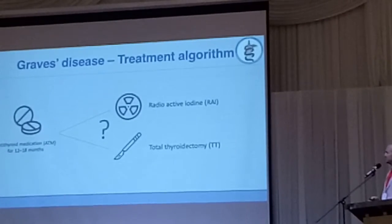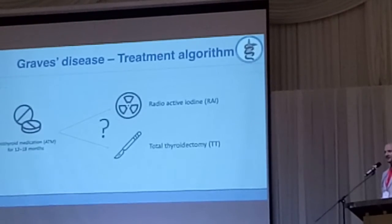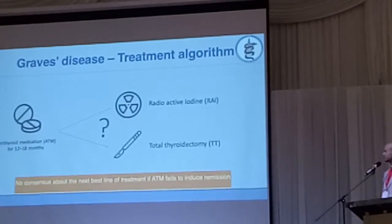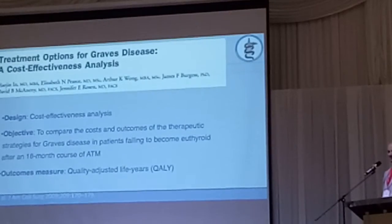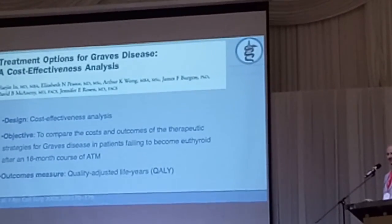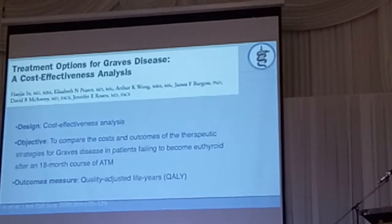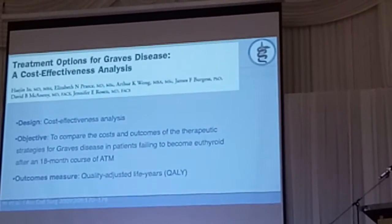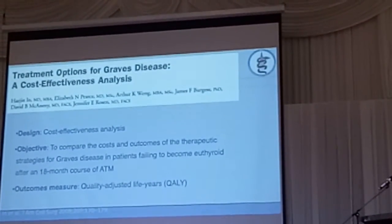In the US they did a study looking at the treatment algorithm. They looked at patients who had anti-thyroid medication for 12 to 18 months, and performed a cost-effectiveness analysis — to see what we're actually paying for these patients and what is related to outcomes.